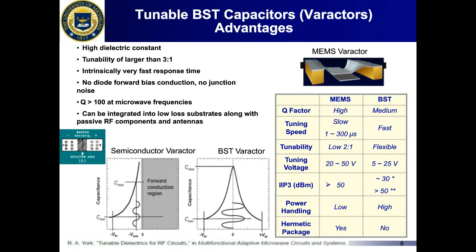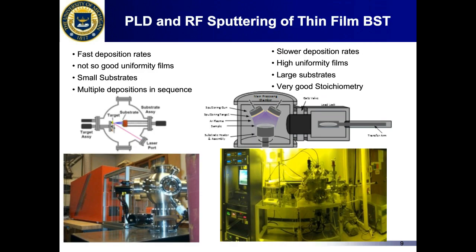The material can be deposited on low-loss substrates and incorporated with other low-loss RF components like antennas and transmission lines, without needing wire-bonding or flip-chip mounting as is the case for diode varactors. Q values achievable at microwave frequencies are larger than 100. The material does not need hermetic packaging and can handle higher RF powers. Typically, such materials are deposited either using pulsed laser deposition or RF sputtering. At the University of Michigan, we currently use RF sputtering to grow the material on four-inch silicon substrates with good stoichiometry.